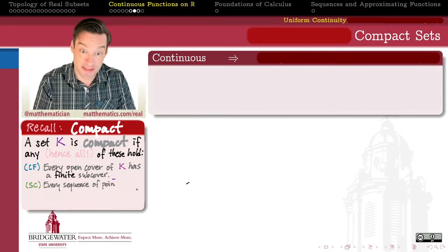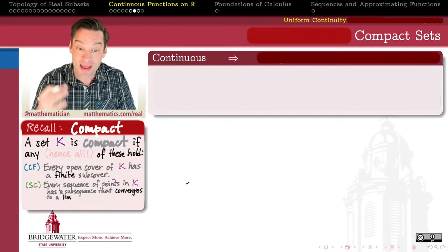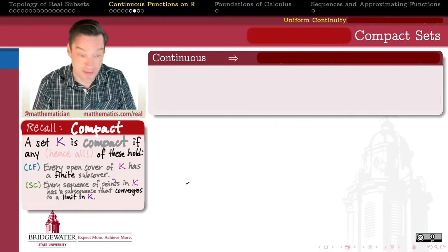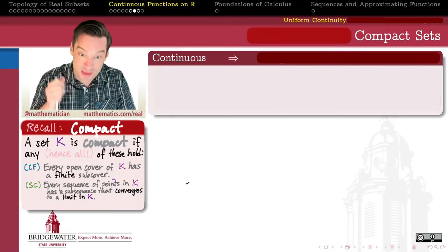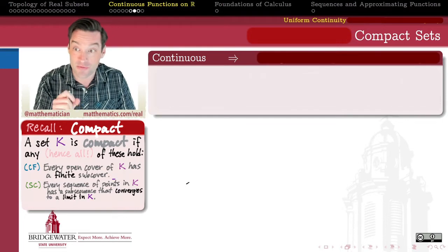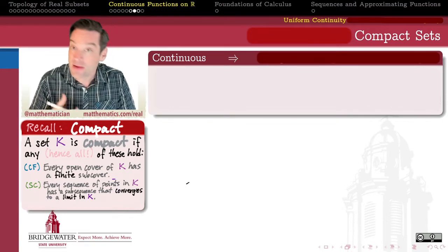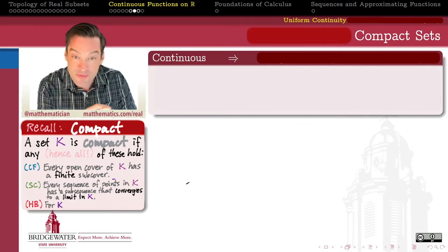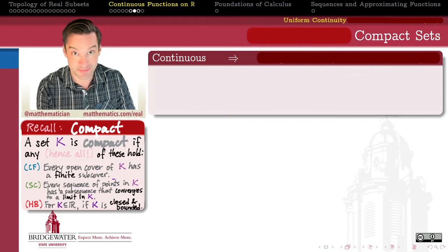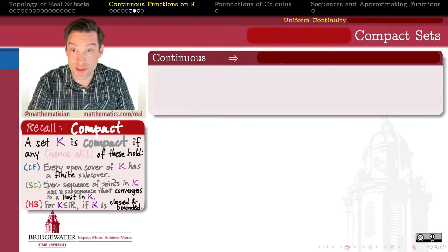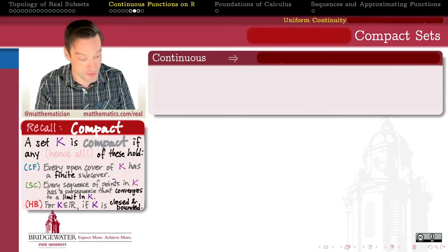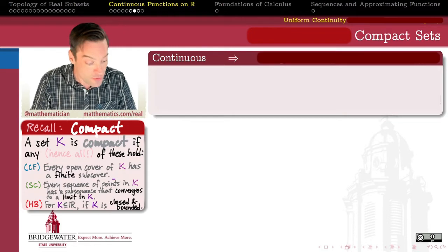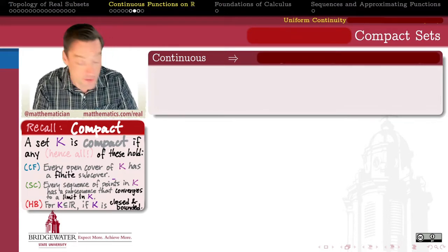The second property was sub-sequential completeness, which says that every sequence of points in K has some sub-sequence that not only is a convergent sub-sequence, but its limit is a point of K. So, there's no way to make a sequence of points inside of a compact set have a limit outside of that set. But then we found out that for subsets of the real numbers, there was a much simpler characterization. Compactness is the same thing as being closed and bounded. So, these are the three different faces that compactness wears as far as subsets of the real numbers go.